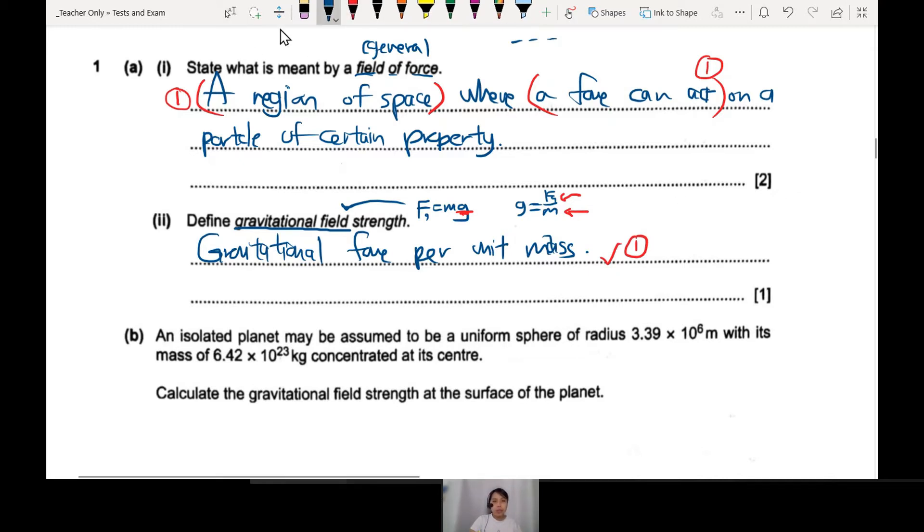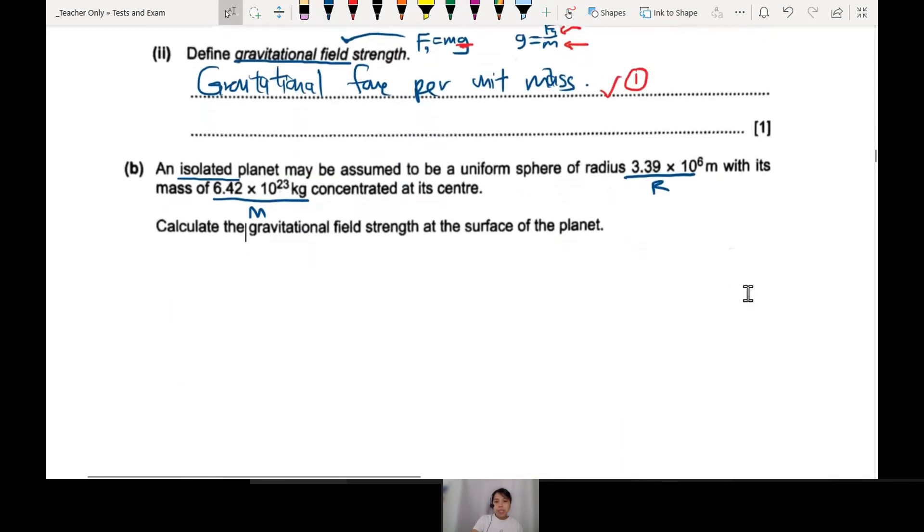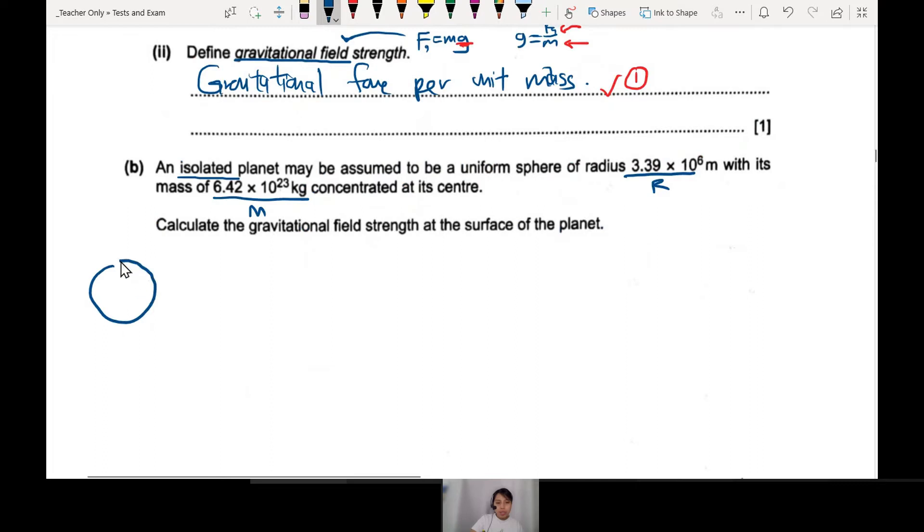Moving on, this is a g field question, chapter eight. Isolated planet - why do they say isolated? Very far away, so you assume no other gravitational forces. Isolated planet is a sphere with a radius, mass concentrated at the center. Calculate the gravitational field strength at the surface of the planet. I like to draw pictures to help me understand the question. A planet with mass M and a certain radius, and you want the gravitational field strength at the surface.